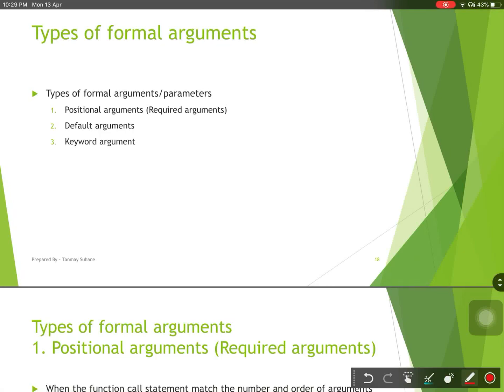Let us now discuss types of formal arguments. There are three different types of formal arguments. First is positional argument or required argument. Second is default argument. Third is keyword argument. We will discuss these three things one by one.